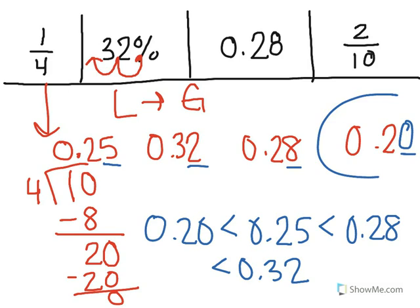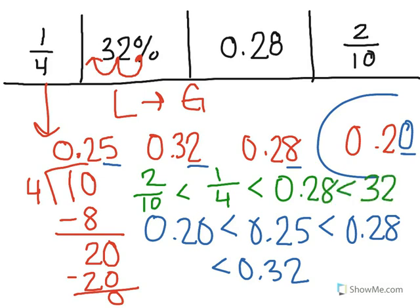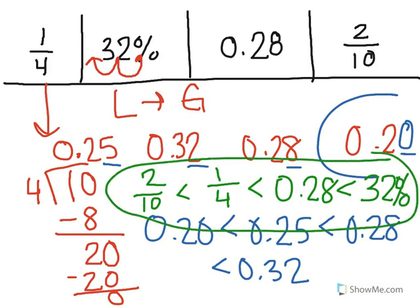When I'm putting these in order from least to greatest, I always want to go back to my original numbers that I started with. So this 20 hundredths, that was 2/10 as a fraction. So we've got 2/10 is less than—25 hundredths was 1/4—is less than 0.28, which was written as a decimal, and our largest number is 32%.